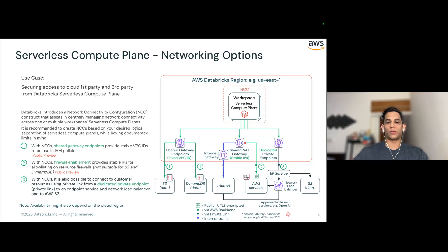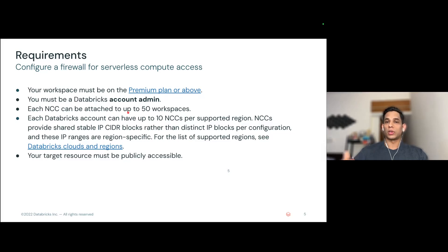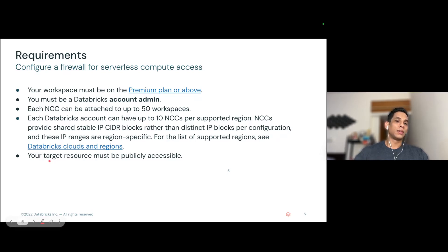There are a few things to keep in mind before you can start using NCC firewall enablement. Your workspace must be on a premium plan or above. You must be a Databricks account admin to create NCCs. You can create up to 10 NCCs per supported region from your Databricks account, and each NCC can be attached to up to 50 workspaces in the region. Make sure to check that your workspace region is supported for NCC by checking the public documentation. NCCs provide shared stable IP CIDR blocks per region, not per workspace. Finally, the resources you target to connect to from your serverless clusters must be publicly accessible.